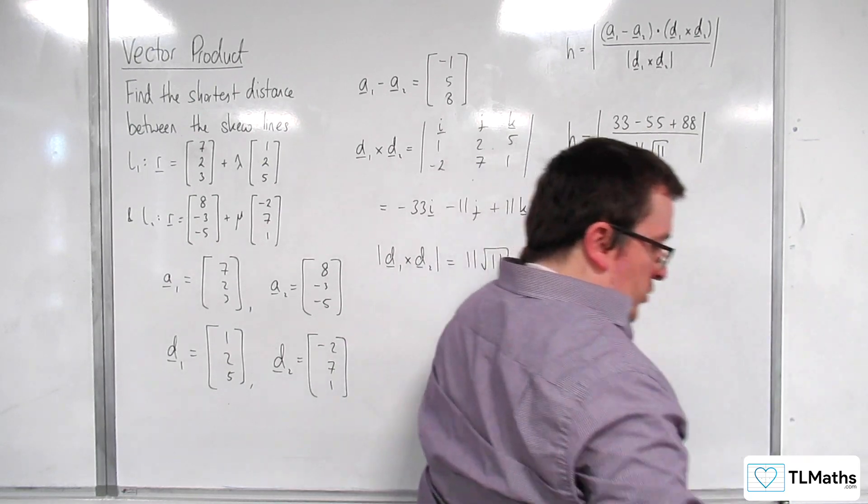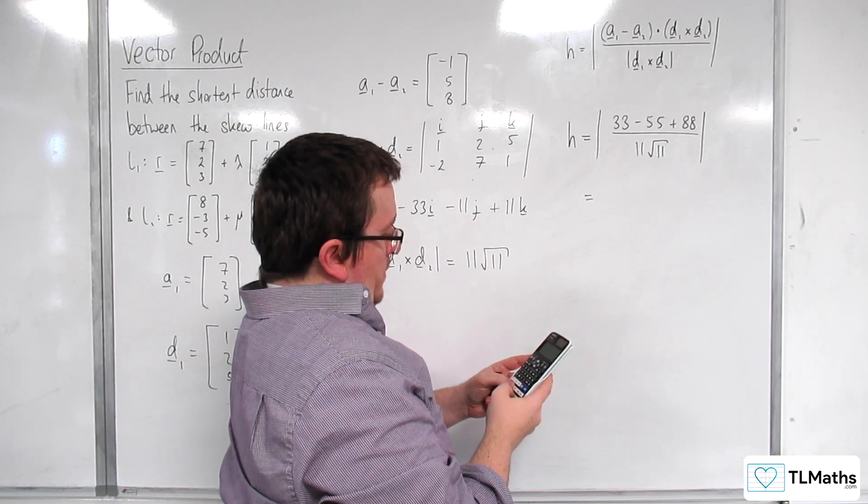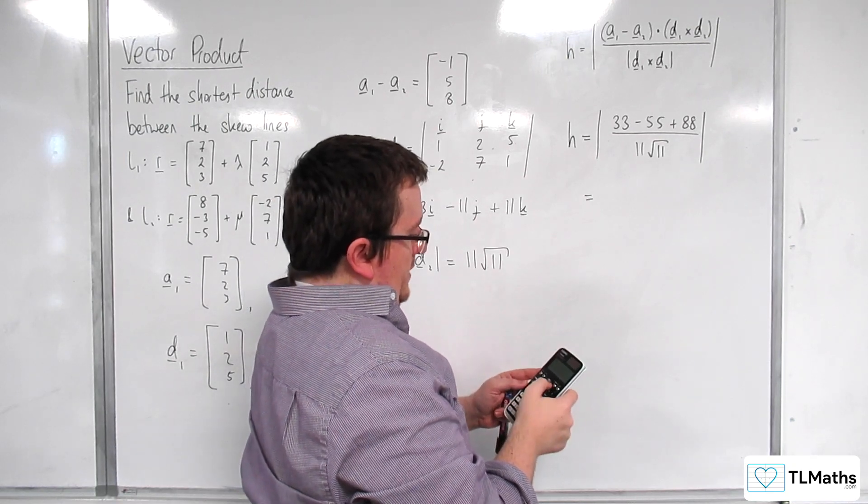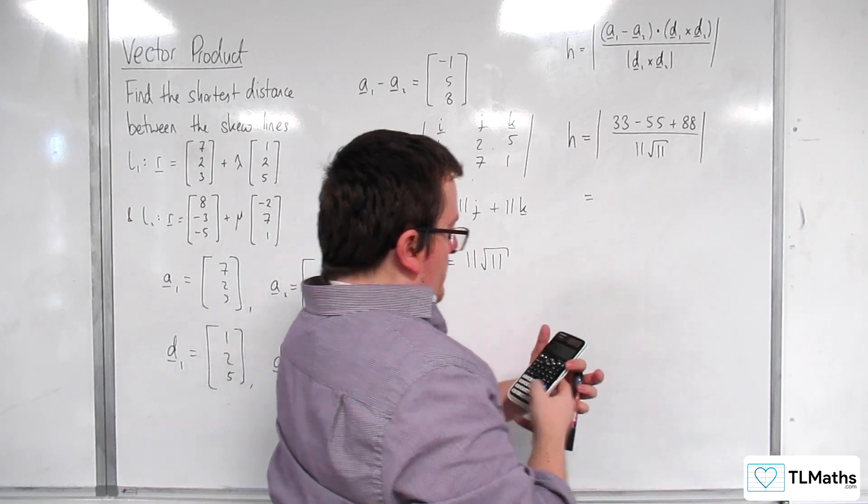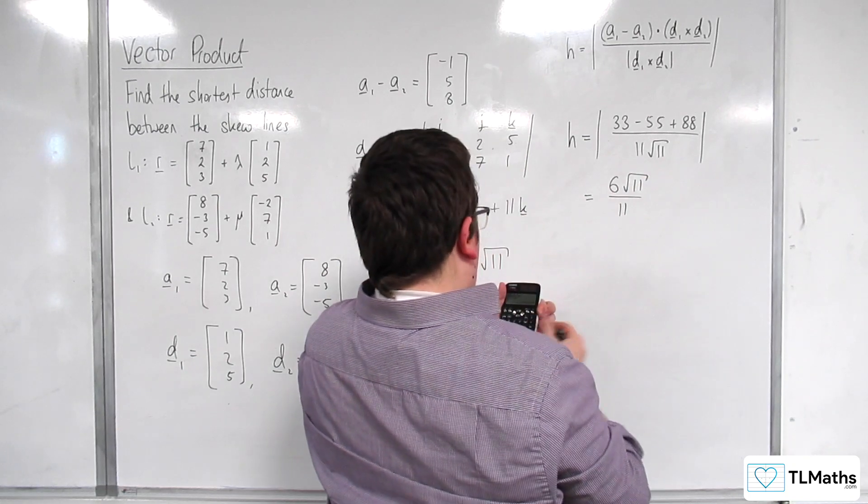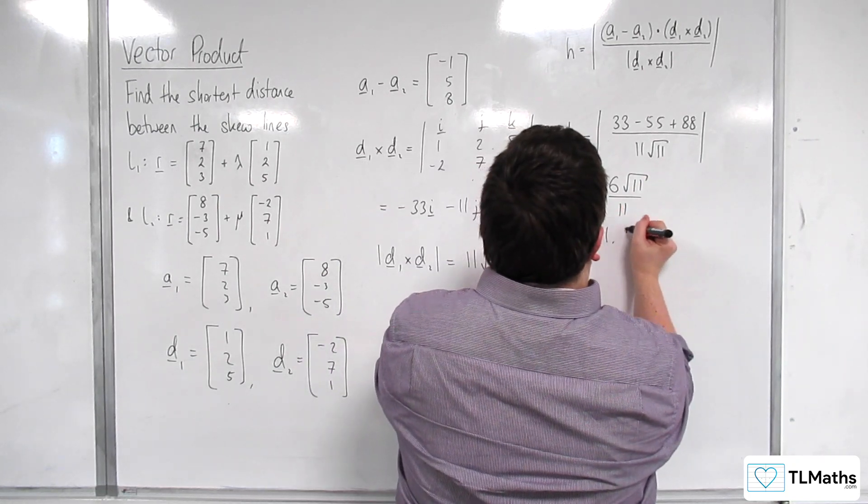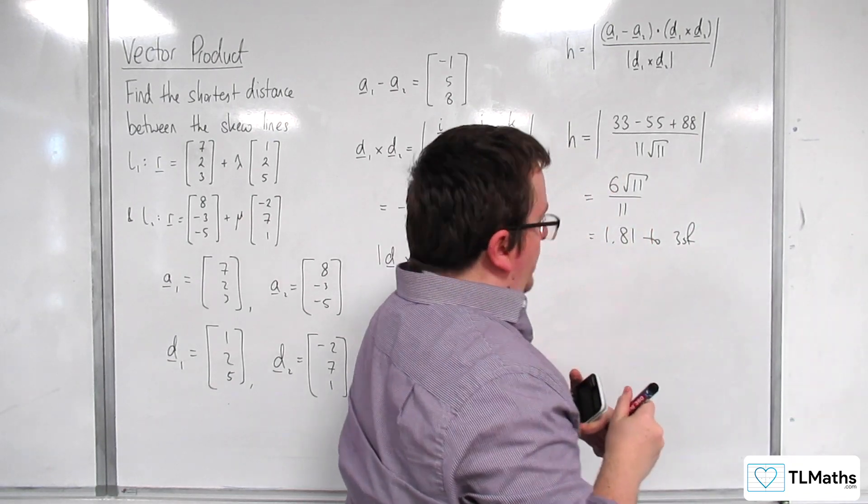Okay, so we just need to make sure that's positive. So, we've got 33 take away 55 plus 88 divided by 11 root 11. And we get 6 root 11 over 11, which is 1.81 to 3 significant figures.